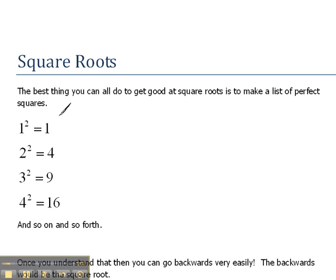Now, once you understand the perfect squares, then you can go backwards. For instance, the backwards of squaring or the opposite of squaring something would be to take the square root. So the square root of 1 would equal 1. The square root of 4 would equal 2. The square root of 9 would equal 3. The square root of 16 would equal 4. And so on and so forth.